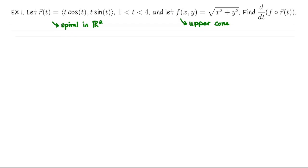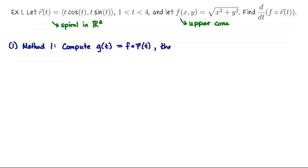We are going to compute the derivative of the composition F of R of T with respect to T in two different ways. The first way is to compute the composition so that F of R of T looks like a regular scalar-valued function of one variable, and then differentiate it. Then we'll check that we get the same answer with the chain rule. Let's call that G of T equals F of R of T, and we'll compute G prime of T.